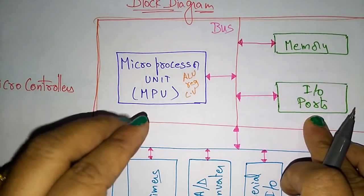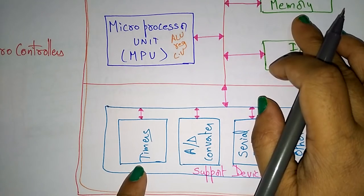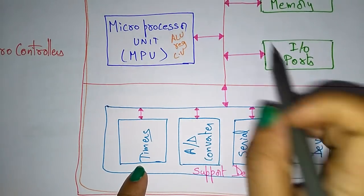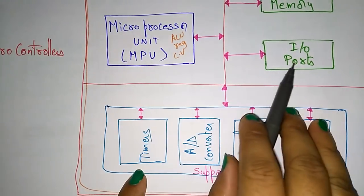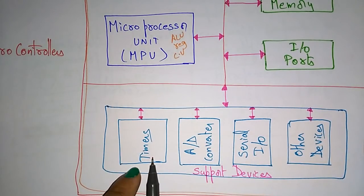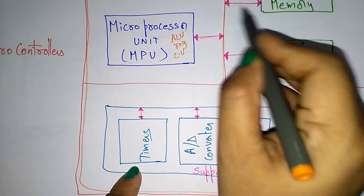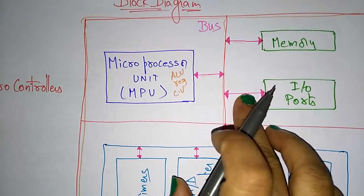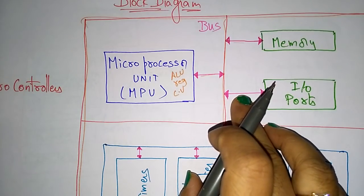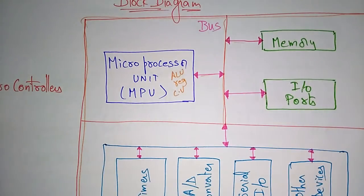Along with the microprocessor, it is having memory devices and input/output devices present in the chip, along with timers. Memory is used to store data, to send information, and to receive data — that's why it is bi-directional. Input/output ports: input is sent to the processor and output is placed on these ports. The timers indicate timing information regarding all the buses. These lines you call buses — a communication line.